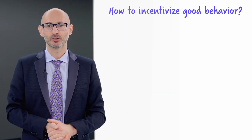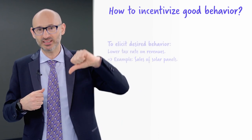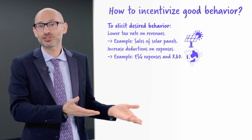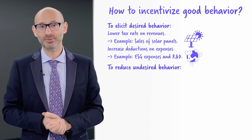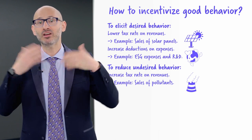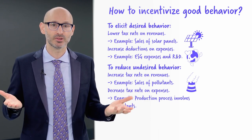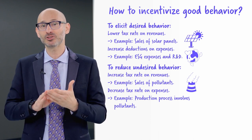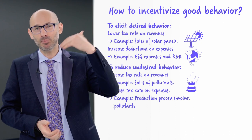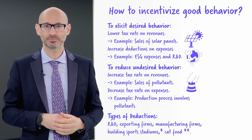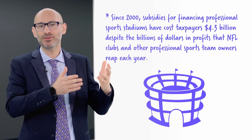Let us do some examples. To encourage good behavior, governments can apply lower tax rates on the sales of solar panels, or increase deductions on expenses that include ESG and R&D. To reduce undesired behavior, governments can increase tax rates if you are selling pollutants, or decrease deductions if your expenses involve pollutants. The tax code is very big and complex — about 2,600 pages for the US code and another 70,000 pages of interpretations. European tax codes are even longer. Building sports arenas has a favorable tax treatment, for example.